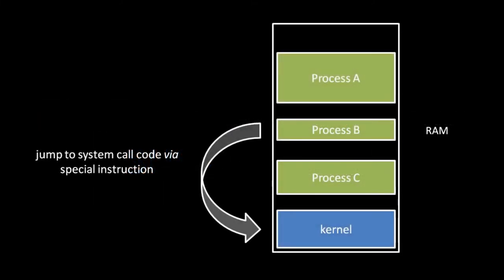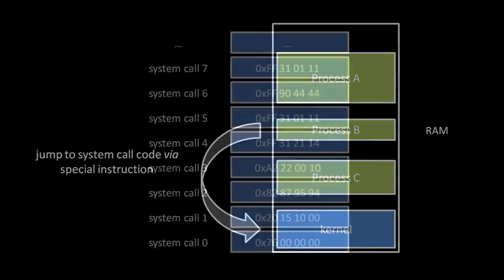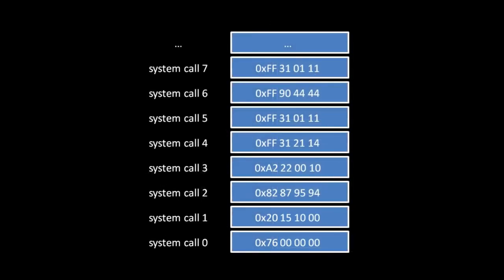From the perspective of a program, the primary thing which defines an operating system is what system calls it makes available. System calls are functions in the operating system code which programs can invoke using a special instruction. These functions are the primary means by which the operating system exposes functionality to programs so that programs can use features of the hardware, like reading and writing data on a storage device or sending and receiving data across the network. The reason these functions can only be invoked with a special instruction is that normally a process can't read and execute data that's part of the operating system kernel itself. The instruction to invoke a system call specifies the number of the system call, causing the CPU to look up a corresponding address in a special table.